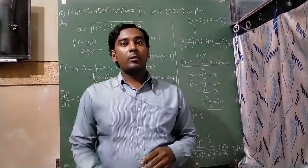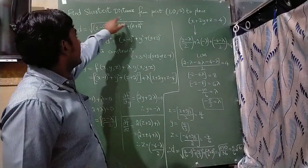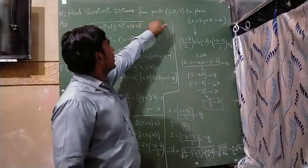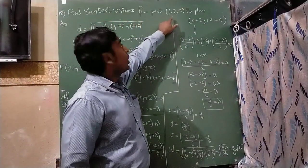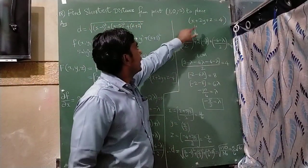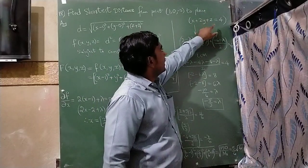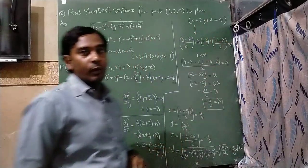Hello everyone, today I am going to teach: find the shortest distance from the point (1, 0, -2) to the plane x + 2y + z = 4.